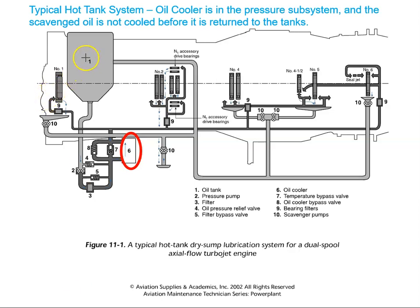We'll start with section one here. This is the oil tank. Oil is stored in the oil tank and it then flows by gravity down to the oil pump. The oil is pressurized by the pump and then it flows through the filter, which then prevents any dirt that may be in the oil from getting to the jets.